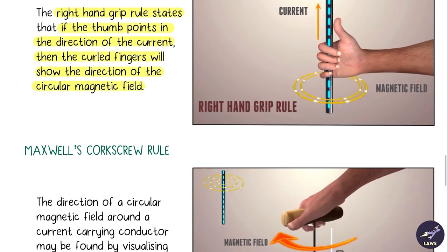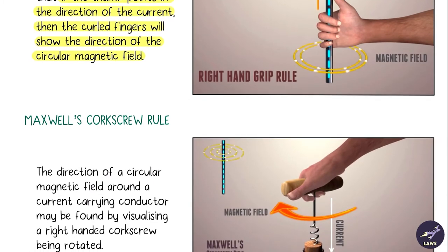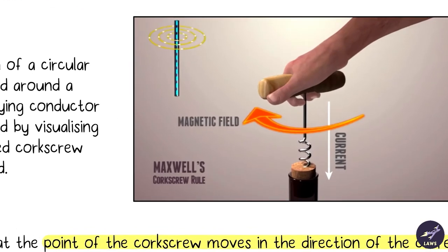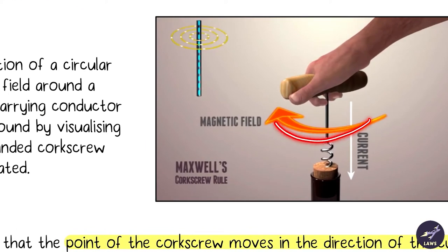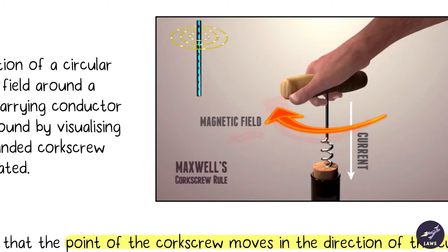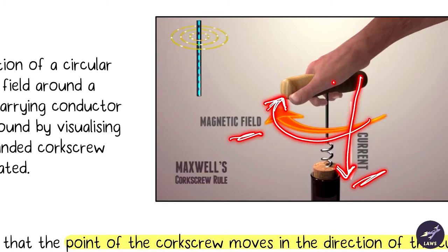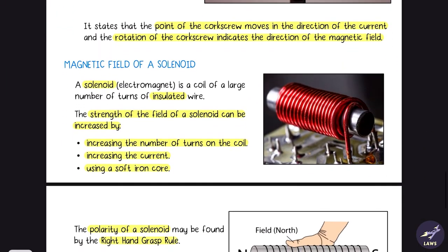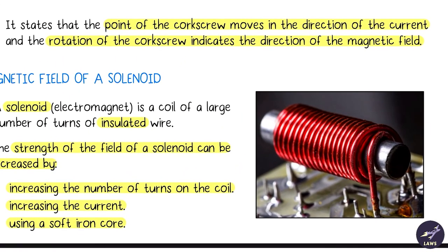Similarly, we have Maxwell's corkscrew rule. If we have a corkscrew, the direction of rotation of the corkscrew gives the direction of the magnetic field, and the direction in which you are pushing the corkscrew gives the direction of the current.